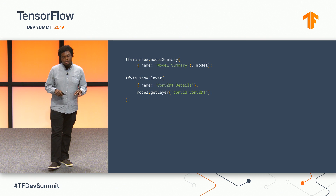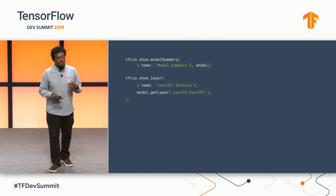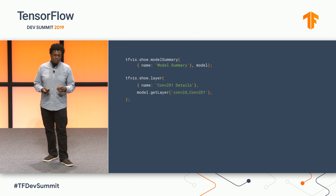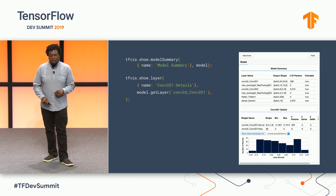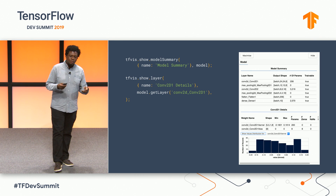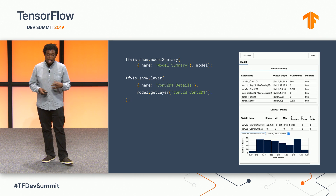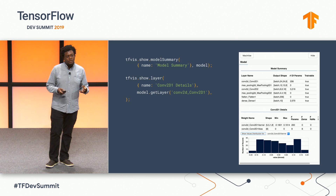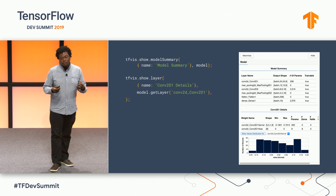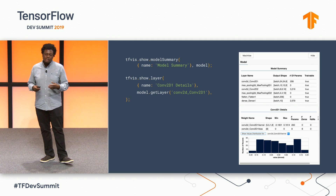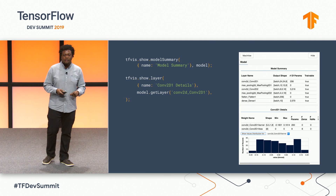You can also look at model internals with functions like show.modelSummary and show.layer. Similarly, we pass these named drawing areas. Here we see the architecture of the model including output shapes of various layers and the number of trainable parameters. We also see the distribution of values in the first convolutional layer, including important statistics like NaN and zero counts, which are useful for debugging models.